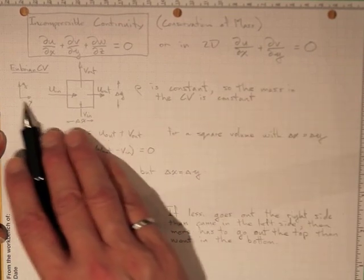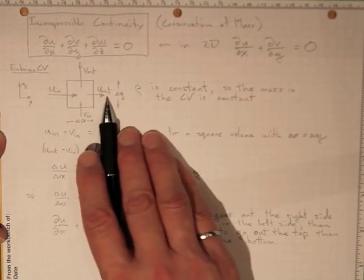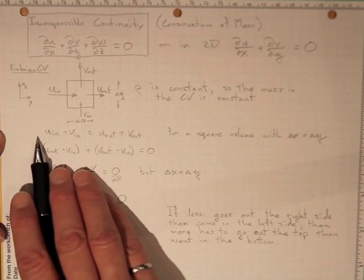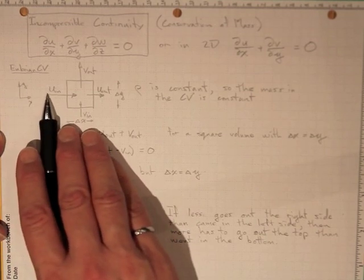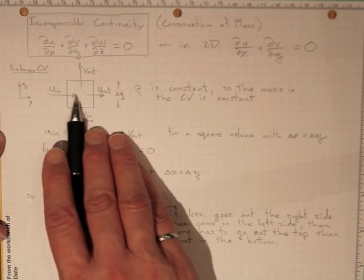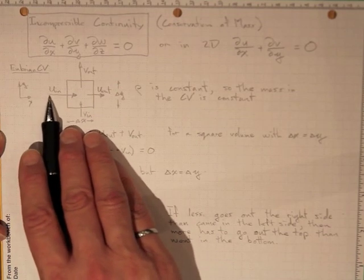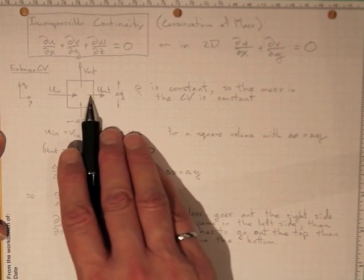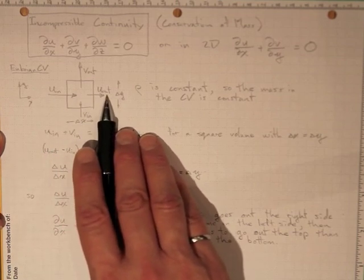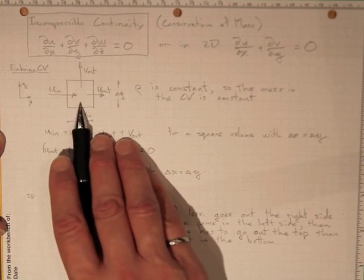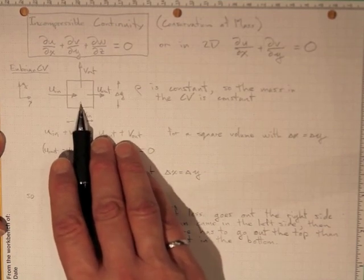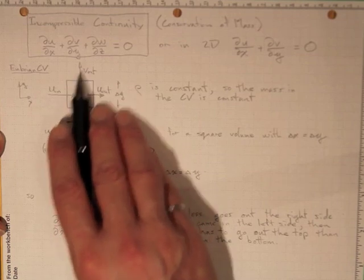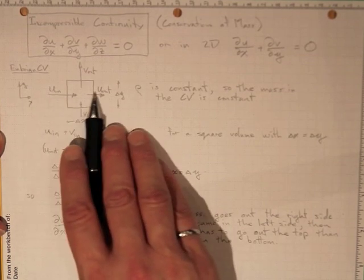Let's look at what that means for an Eulerian control volume in two dimensions, x and y. If we look at the u velocity, the velocity in the x direction, there's flow coming in this side and going out that side. If it's coming in faster than it's going out, then the v velocity in the y direction must speed up for the mass to balance.